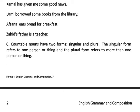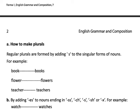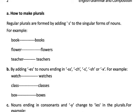Now let's learn singular and plural forms. The singular form refers to one person or thing, and the plural form refers to more than one. For regular plurals, we add 's' to the singular noun — for example, 'book' becomes 'books.' We add 'es' when the noun ends in certain sounds — for example, 'class' becomes 'classes.'